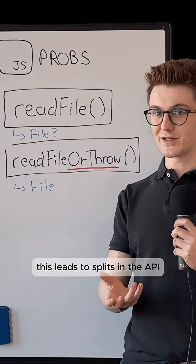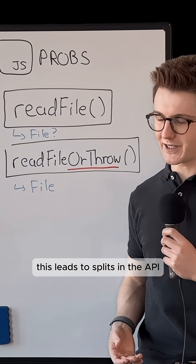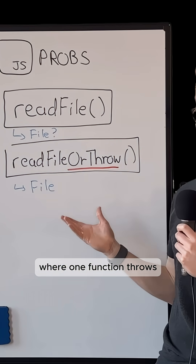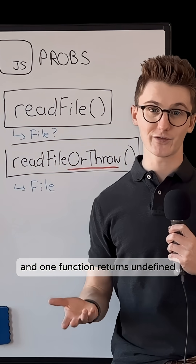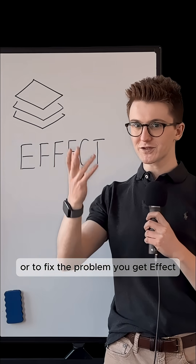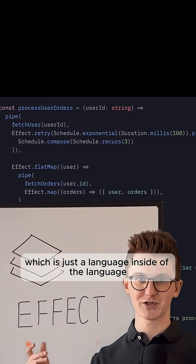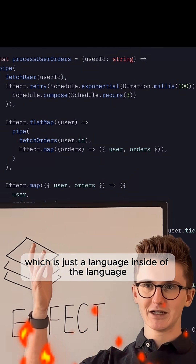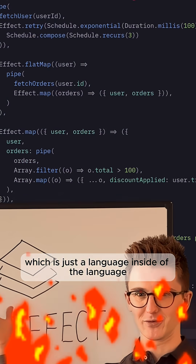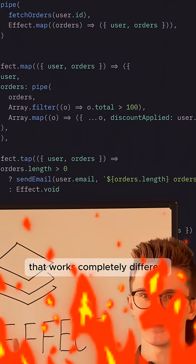This leads to splits in the API where one function throws and one function returns undefined. Or to fix the problem, you get effect, which is just a language inside of the language that works completely different.